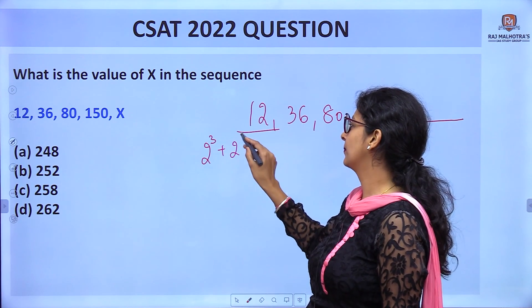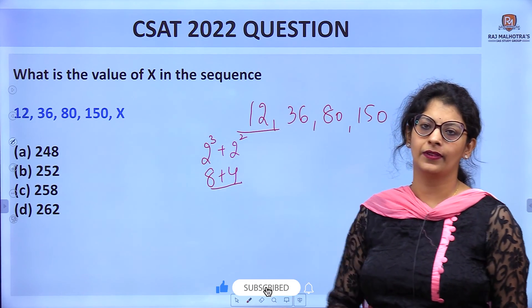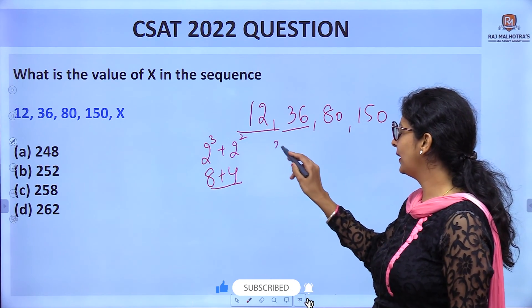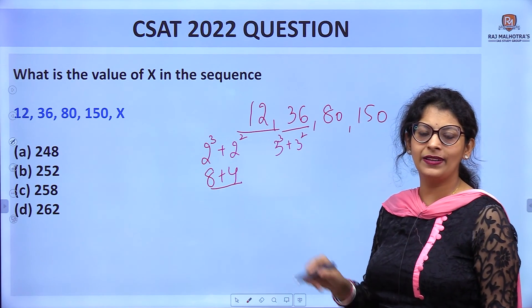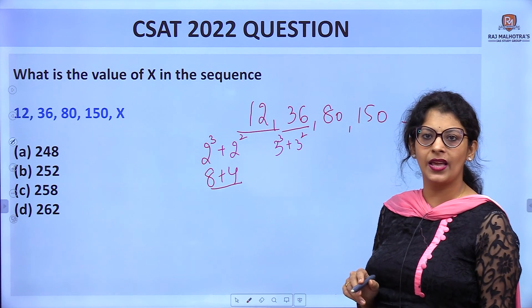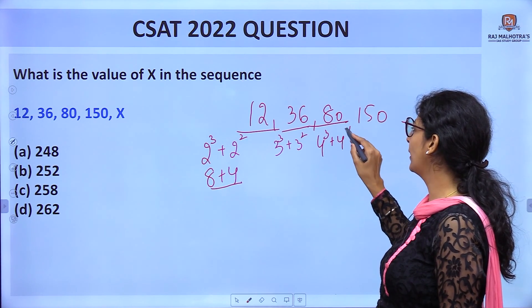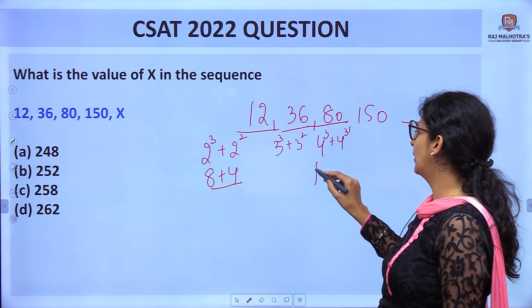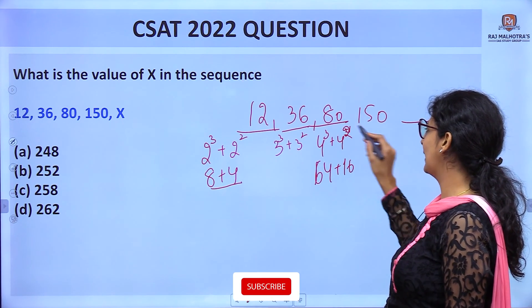12 = 2³ + 2² = 8 + 4. The next one: 36 = 3³ + 3² = 27 + 9. Next is 80 = 4³ + 4² = 64 + 16.